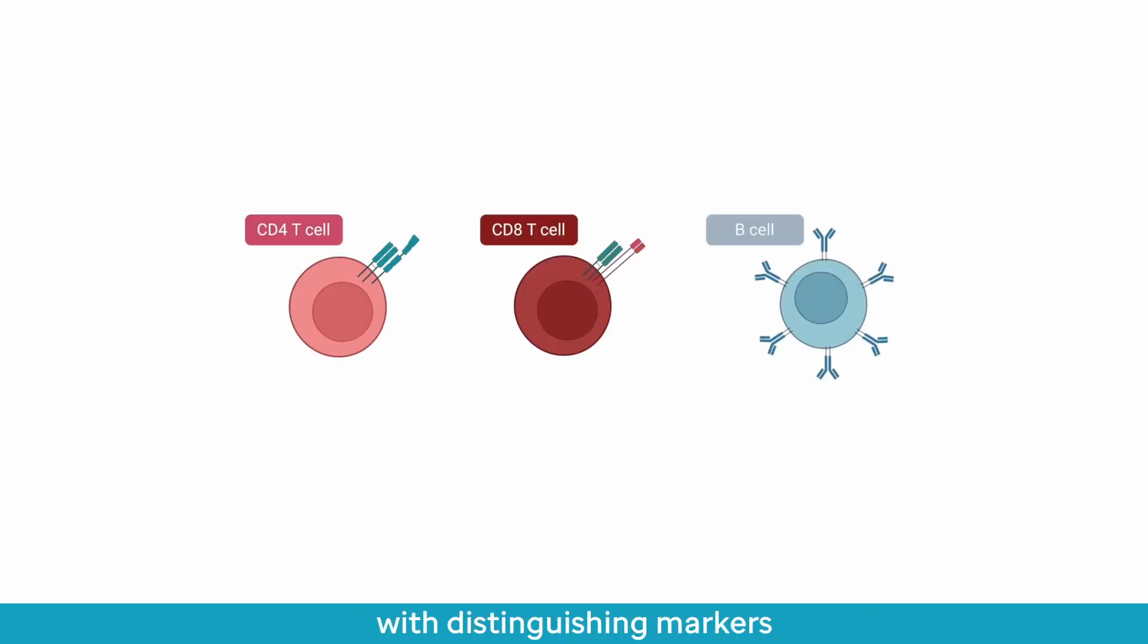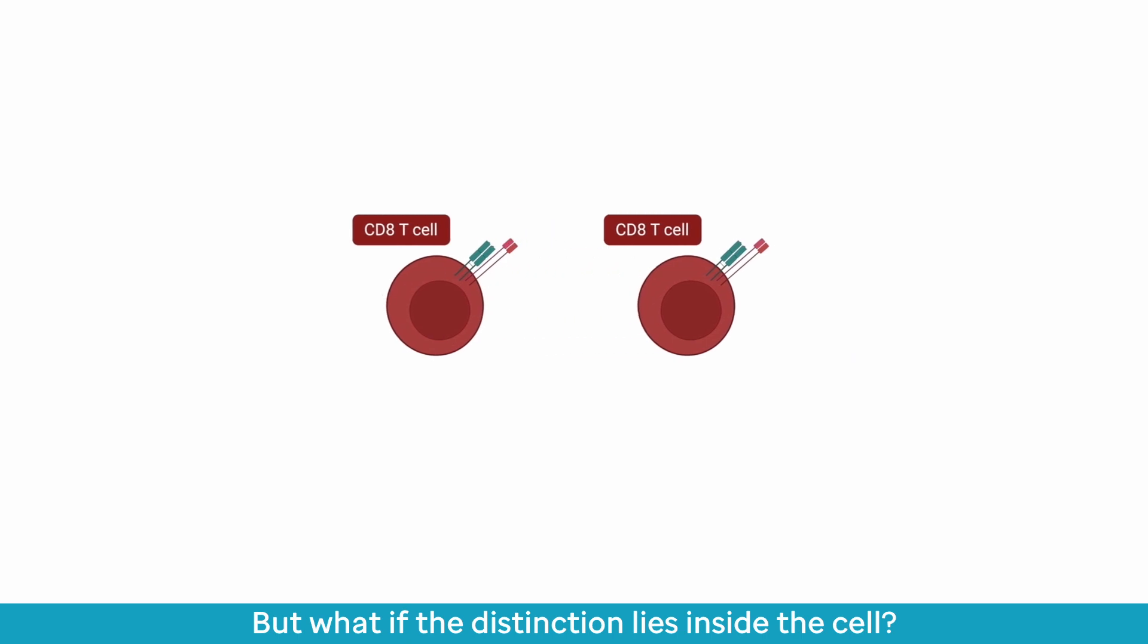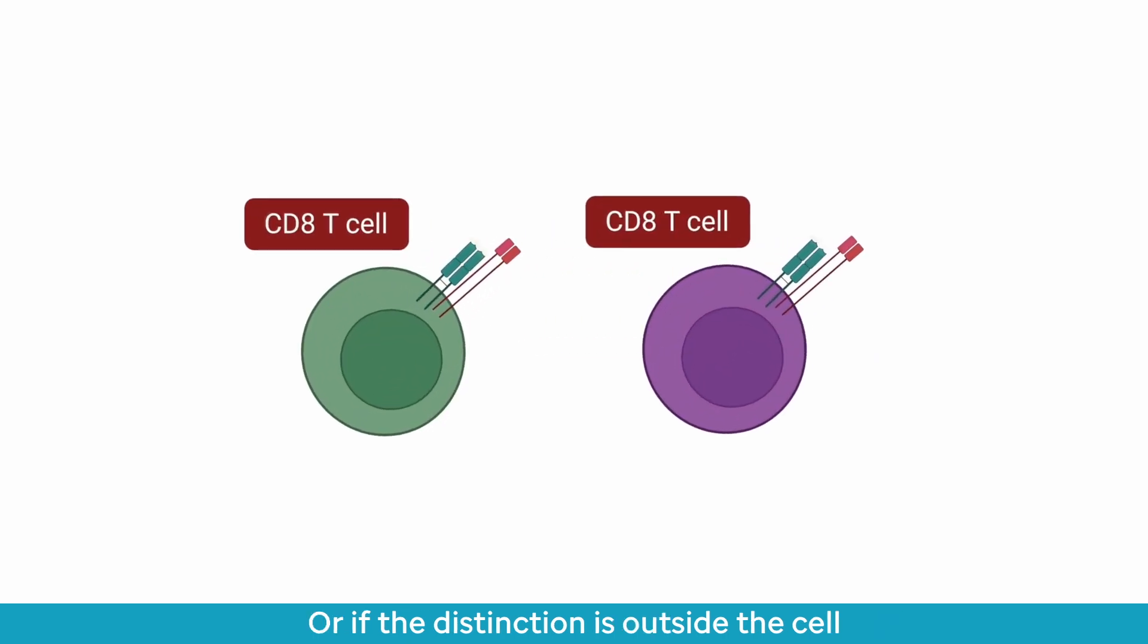This method works very well when we're dealing with distinguishing markers that are on the cell surface, facing outwards from the cell. But what if the distinction lies inside the cell, or if the distinction is outside the cell but is too small of a difference for antibodies to detect?